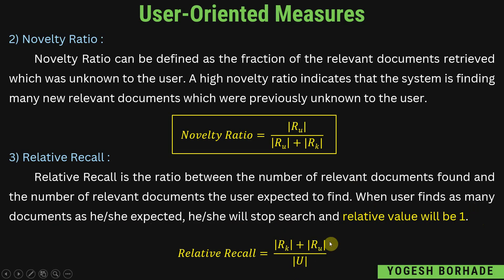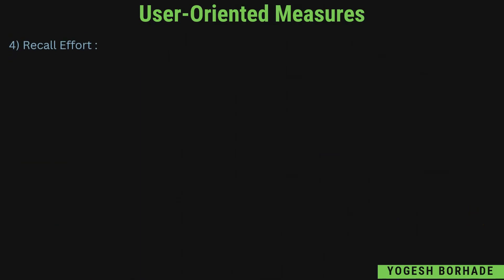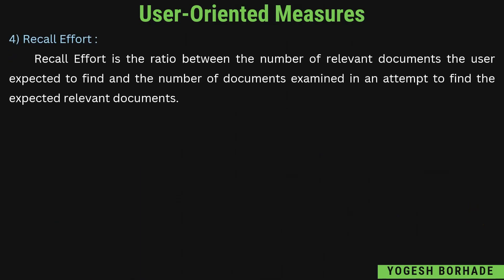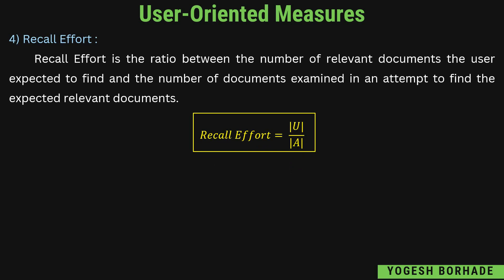Recall effort is the ratio between the number of relevant documents the user expected to find and the number of documents examined in an attempt to find the expected relevant documents. The definitions may be difficult at first, so you can just convert the formulas into definitions — that will also be fine. Recall effort is mod of capital U divided by mod of A, which is your answer set. Now I'll explain this in Hindi.